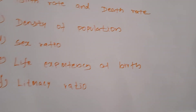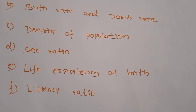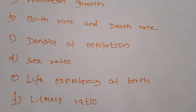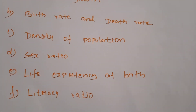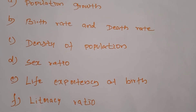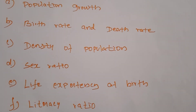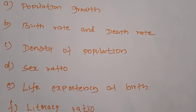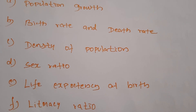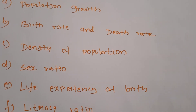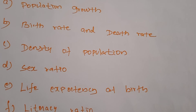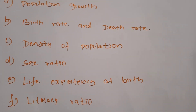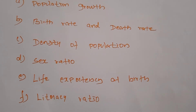The literacy ratio refers to the number of literates as a percentage of the total population. In 1951, only one-fourth of males and one-twelfth of females were literate. But now, 74.0% of the people have achieved literacy.